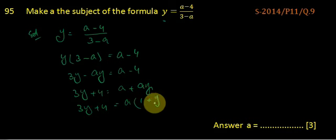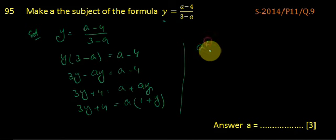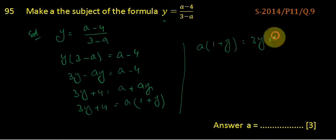So it will become 1 plus Y because A is taken as common. So 1 is left. Now further we can write A times 1 plus Y equals 3Y plus 4.